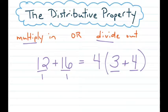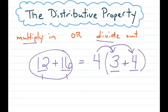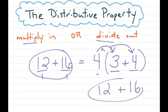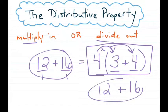To prove this, we can redistribute that 4 back inside the parentheses using multiplication, and we should still get 12 plus 16. Take the 4 and multiply it times 3 — I get 12. Take the 4 and multiply it times 4 — I get 16. So 4(3 + 4) is confirmed as an equivalent expression to 12 plus 16, because we used the division side of the distributive property to factor the 4 out of both 12 and 16.